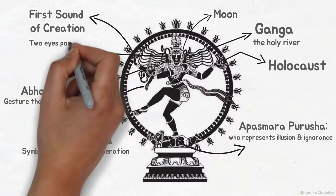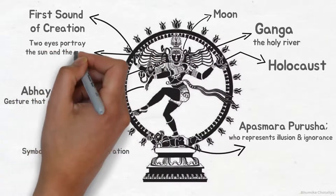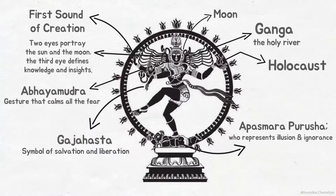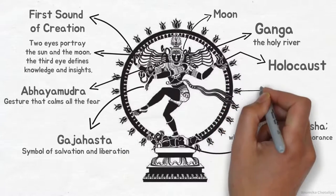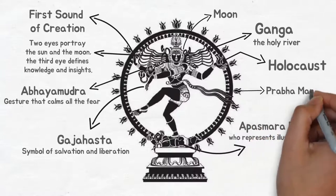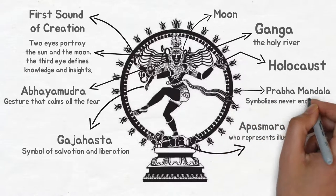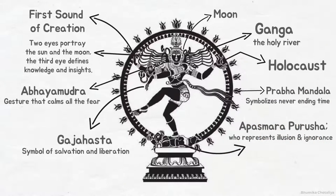The two eyes portray the sun and the moon, and the third eye defines knowledge and insight. Together they symbolize an equilibrium of the three gunas: Sattva, Rajas and Tamas. Shiva in his Nataraj form dances within a Prabha mandal that symbolizes time, presented in a cycle as it is cyclical and never-ending.